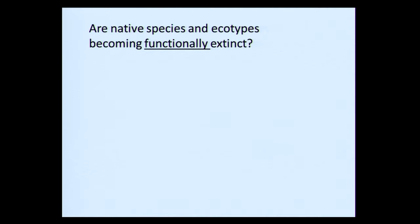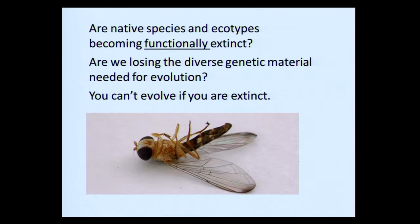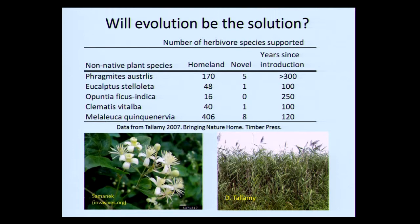Native species and ecotypes, even if not extinct, may be so few that they're functionally extinct — meaning we may be losing genetic material we need for evolution. You can't evolve if you're extinct. There is some evidence of short-term adaptations to invasion, but evolution is not going to be a solution very soon. The number of herbivorous species supported by Phragmites australis in its homeland is 170; in places where it was introduced, only five. Similar results for other invasive species.